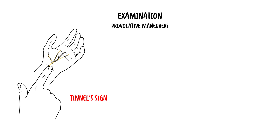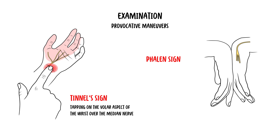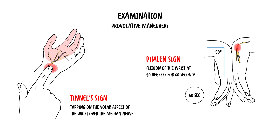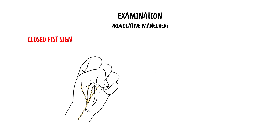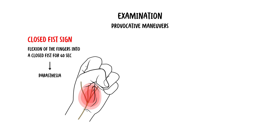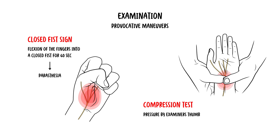There are also provocative manoeuvres, which are pivotal for clinical diagnosis of carpal tunnel syndrome — they essentially try to aggravate or stimulate the symptoms. These include Tinel's sign, where someone taps on the volar aspect of the wrist over the median nerve to produce symptoms in the distribution of the median nerve. Then there is Phalen's sign, where the wrists are flexed 90 degrees for 60 seconds and may reproduce symptoms. Then there is a closed fist sign, where flexion of the fingers into a closed fist for 60 seconds may produce paresthesia in the median nerve distribution. Finally, there is a compression test, where pressure is applied by the examiner's thumb on the palmar aspect of the patient's wrist for 30 seconds, which may produce paresthesia in the median nerve distribution.